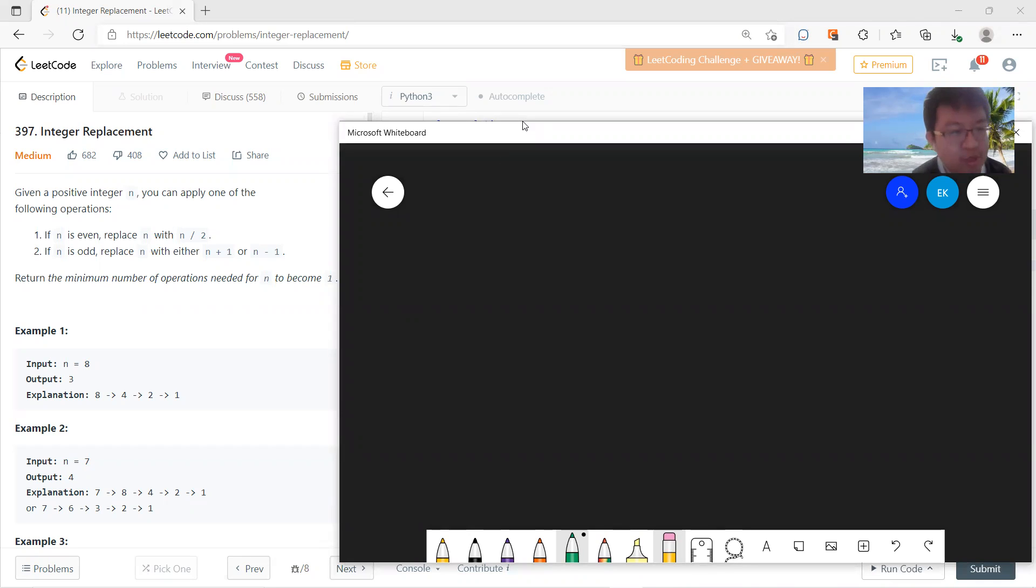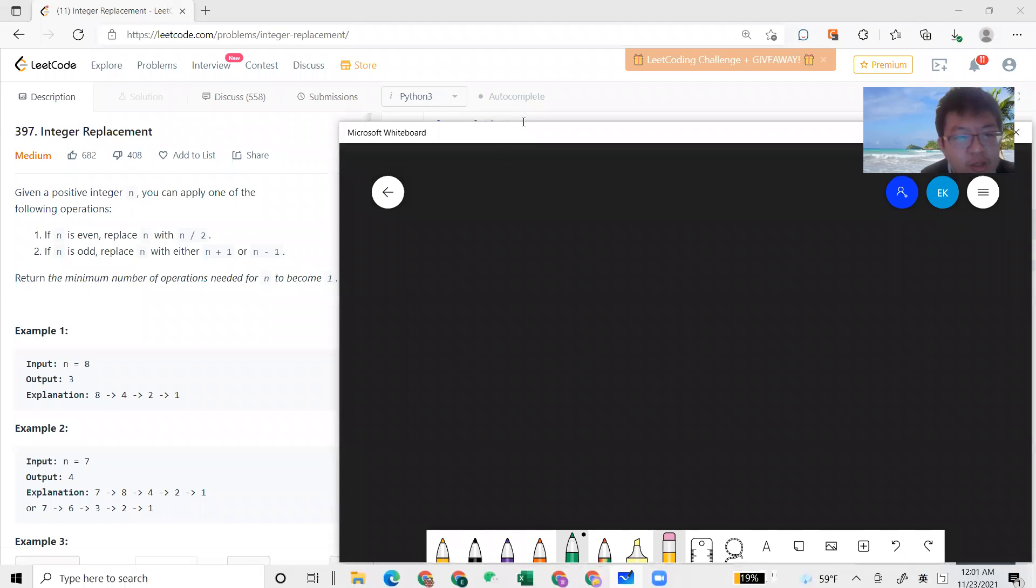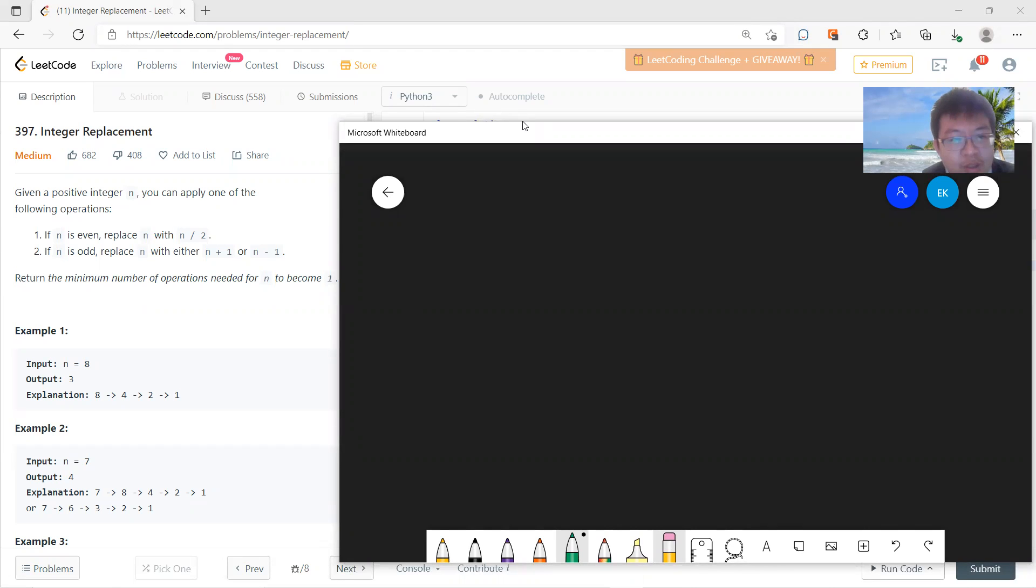So this is 397 integer replacement. Given an integer n, you can replace it with one of the following. So if n is even, then you can replace n with n divided by 2.